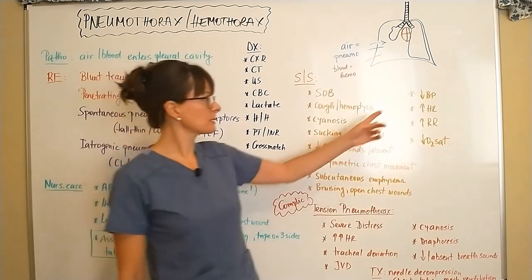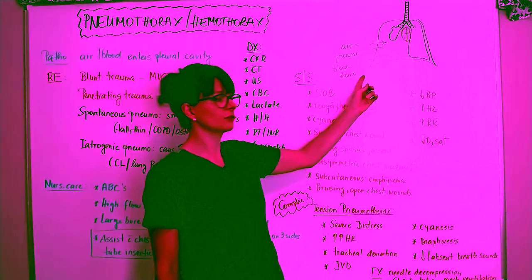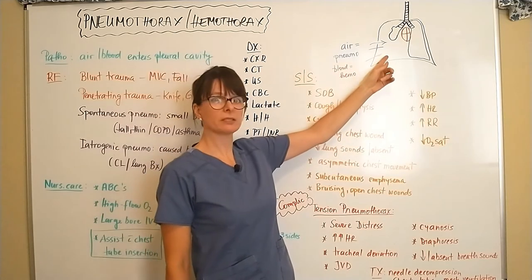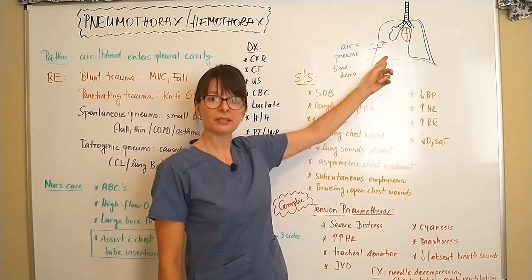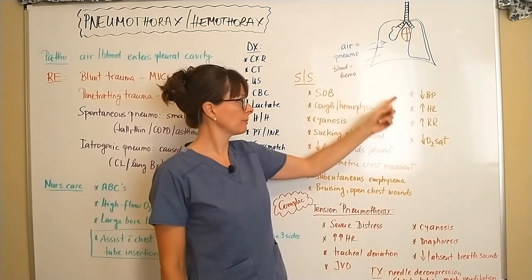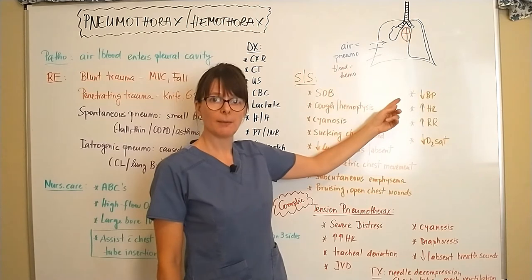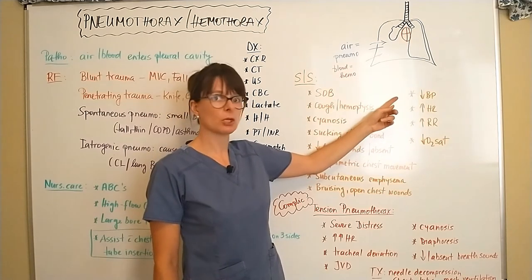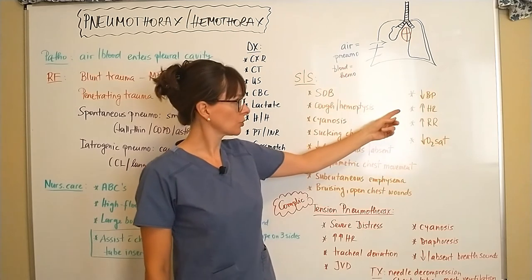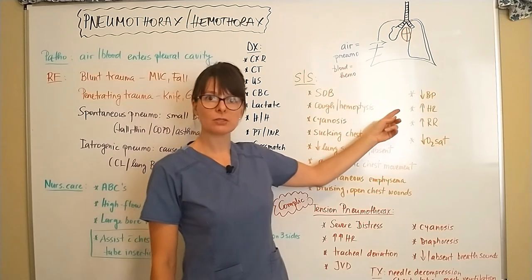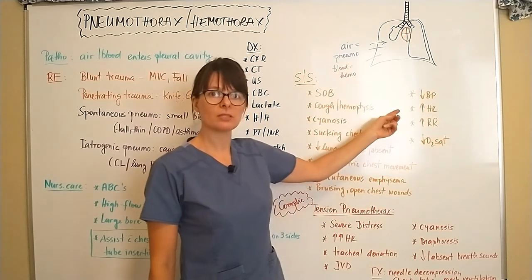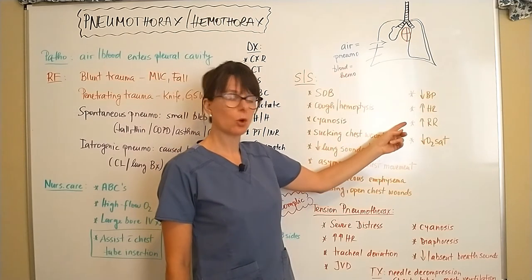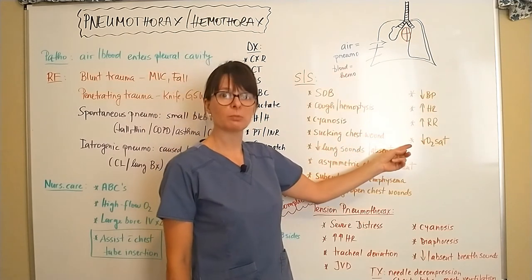In terms of vital signs, the patient will be hypotensive if there is a significant hemothorax, because blood is pooling in the thoracic cavity and not in the intravascular space — the patient will start to develop hypovolemic shock. Heart rate will be increased due to sympathetic nervous system activation, respiratory rate will go up, and O2 saturation will be decreased.